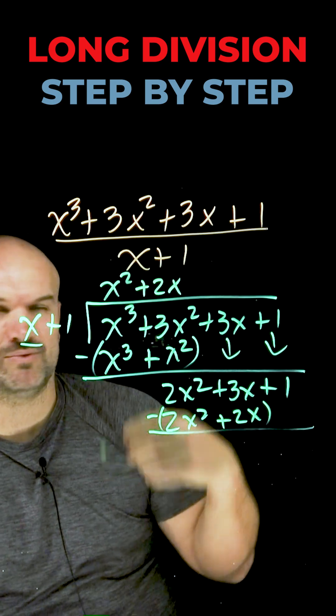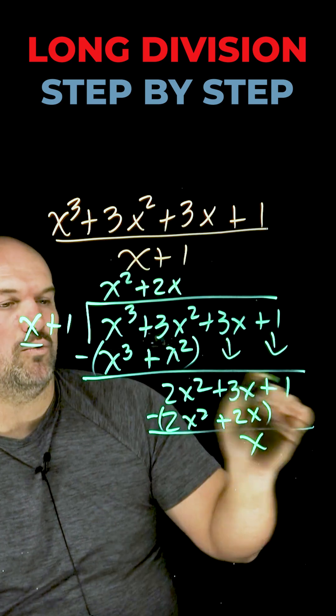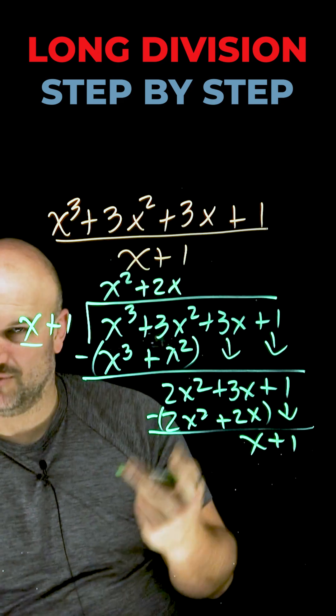2x squared minus 2x squared, 0x squared. 3x minus 2x is going to be a positive x. 1 minus 0, or just bring it down, which is going to be a positive 1. Round number 2.